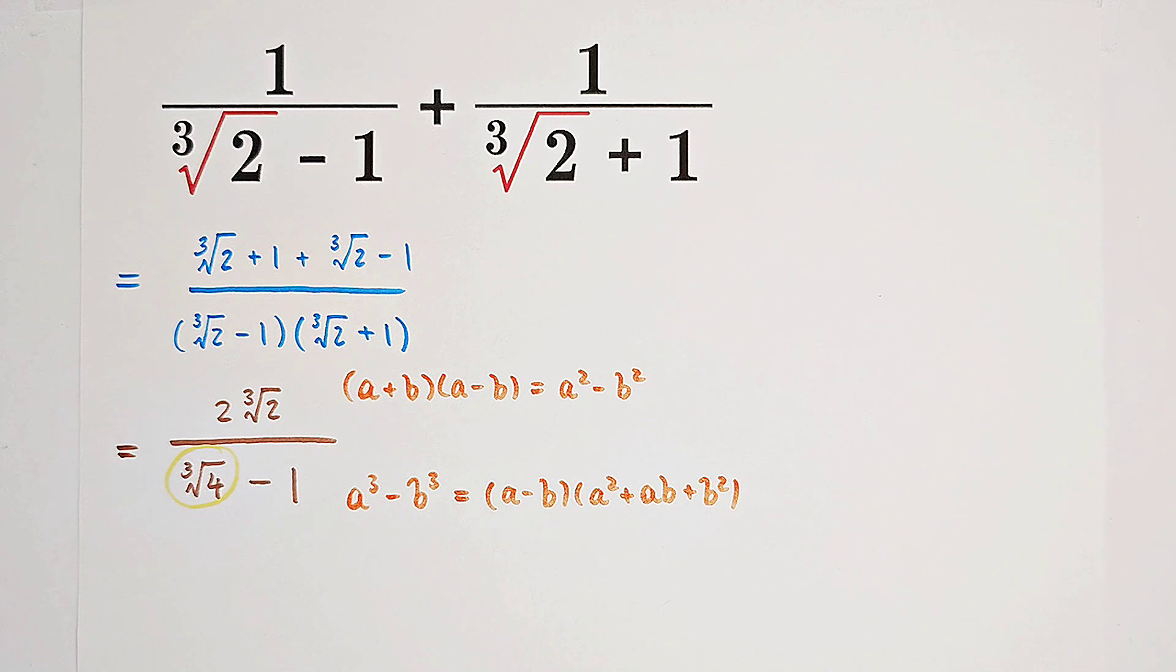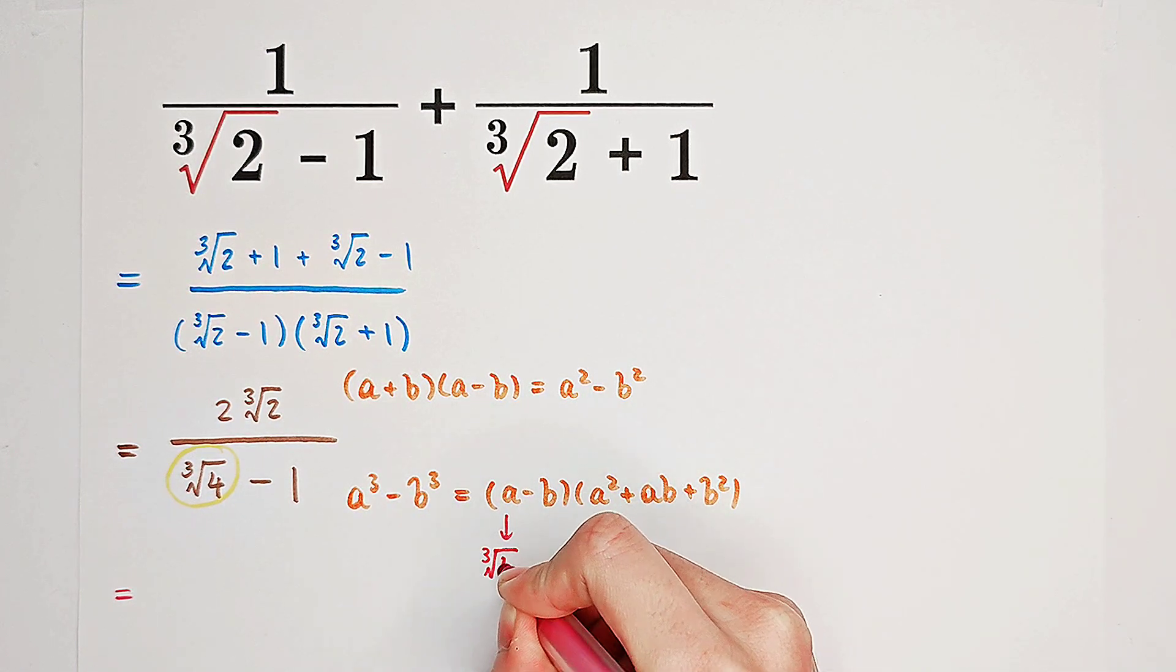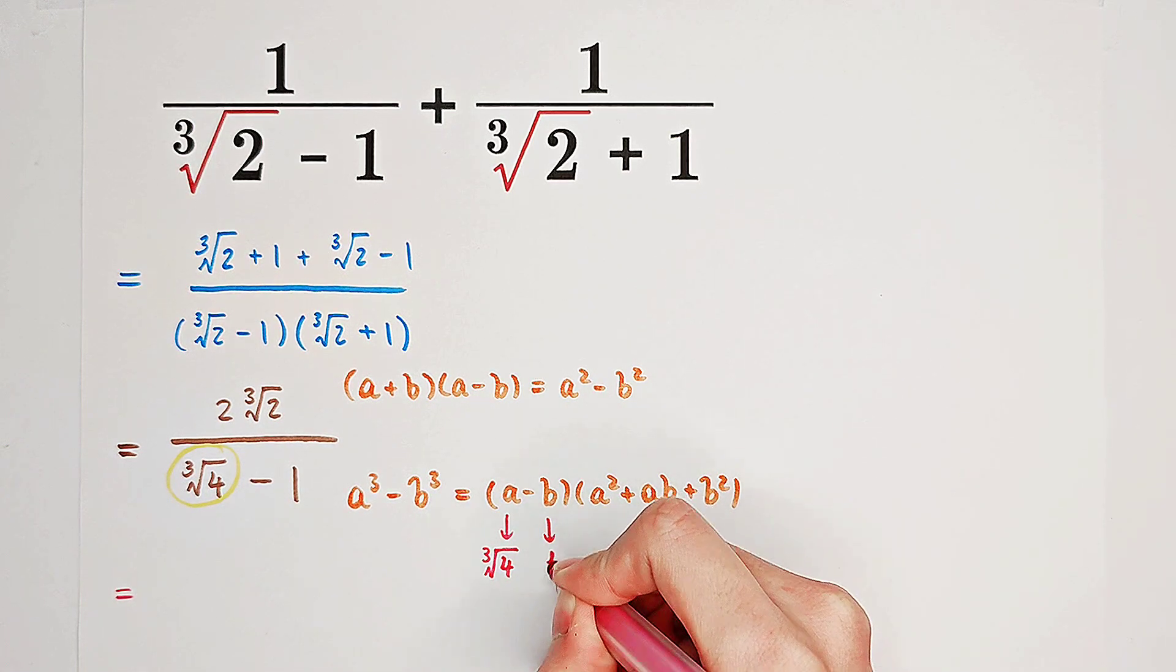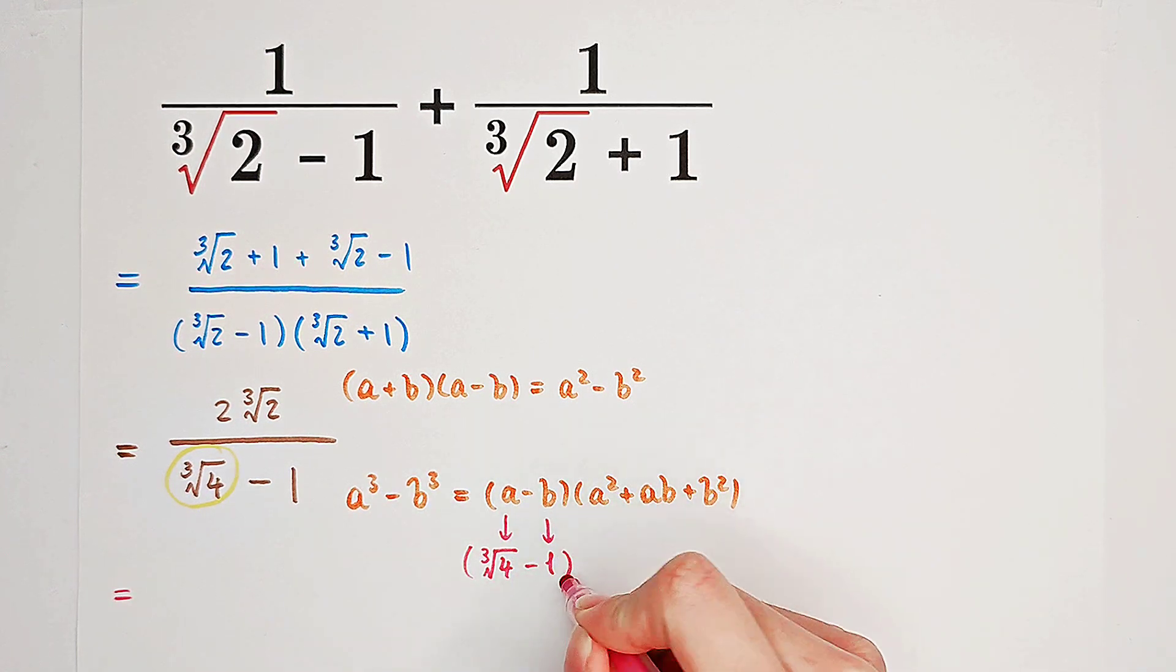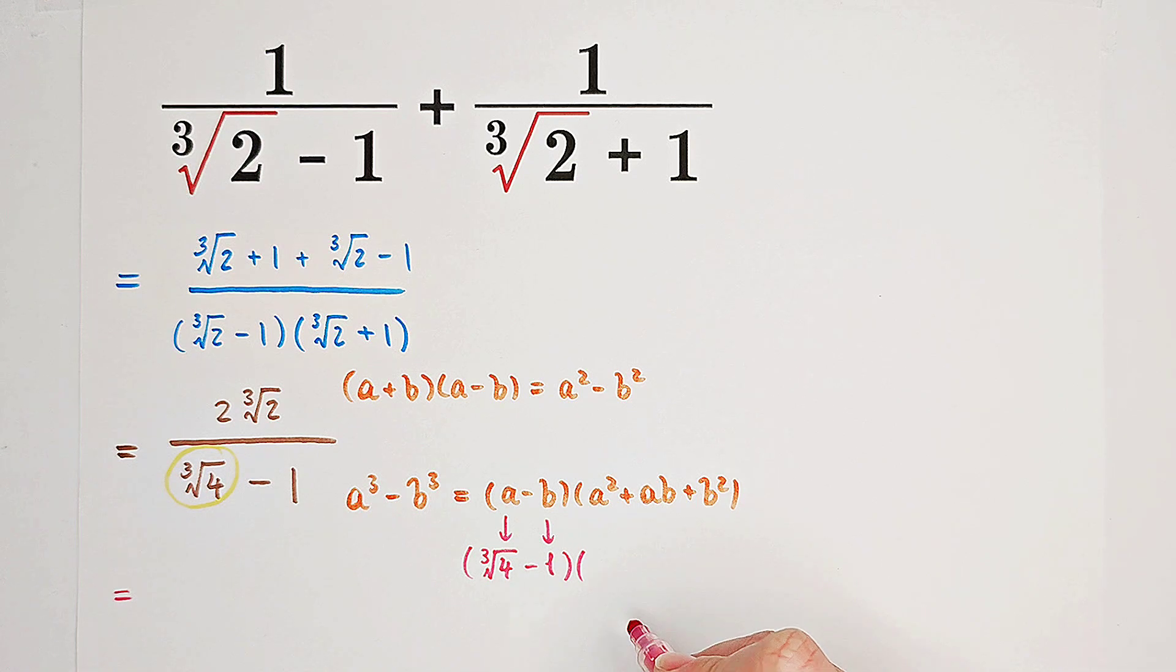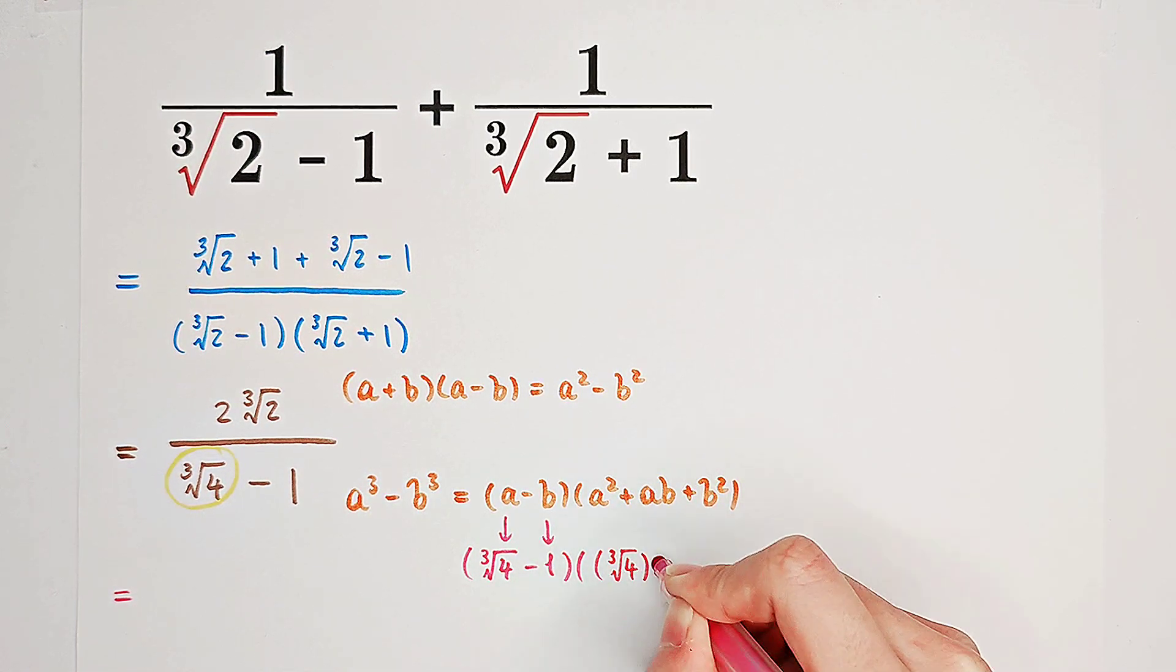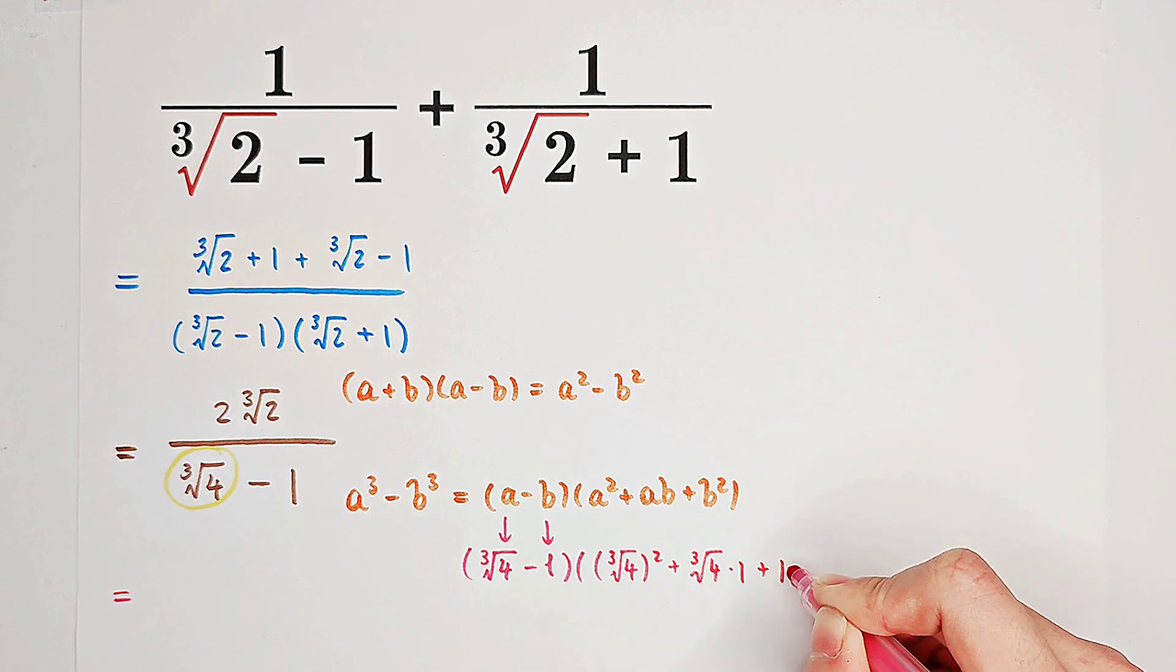If we're willing to get rid of this cube root, then a good idea will be our cube root of 4 is actually a, and b is 1. So it is the cube root of 4 minus 1. If we're willing to get rid of this cube root, then we can multiply this denominator by cube root of 4 squared plus cube root of 4 times 1 plus 1 squared.